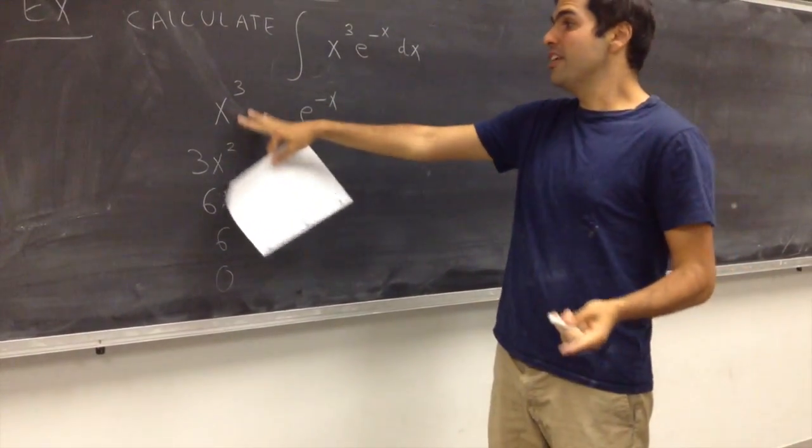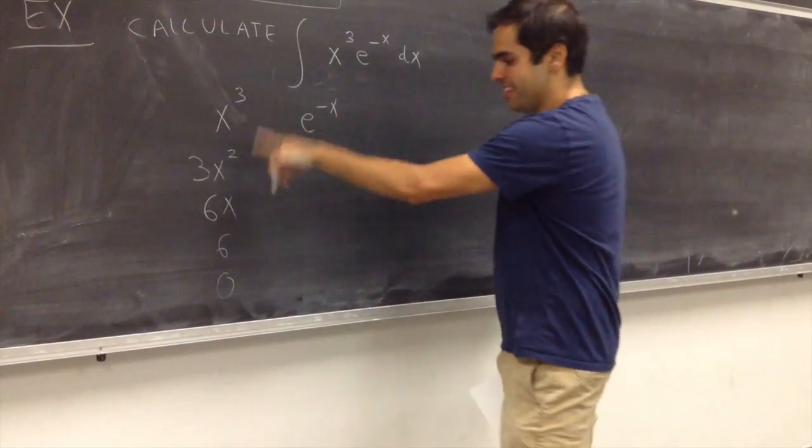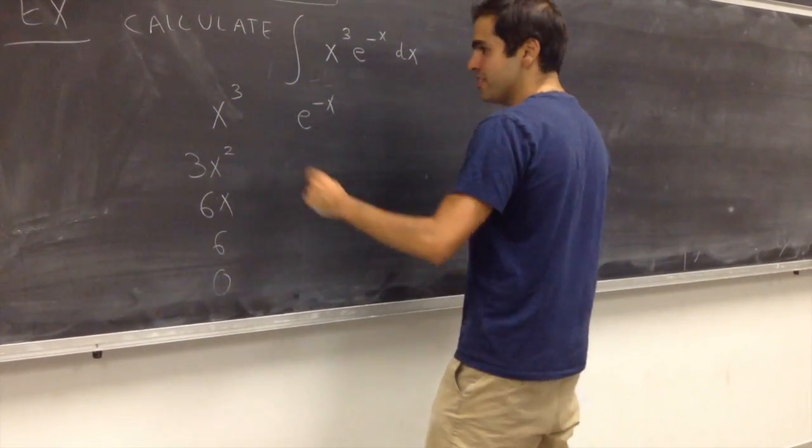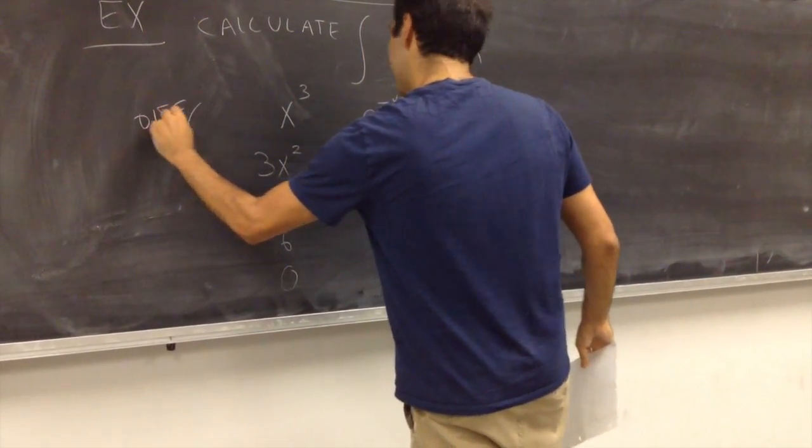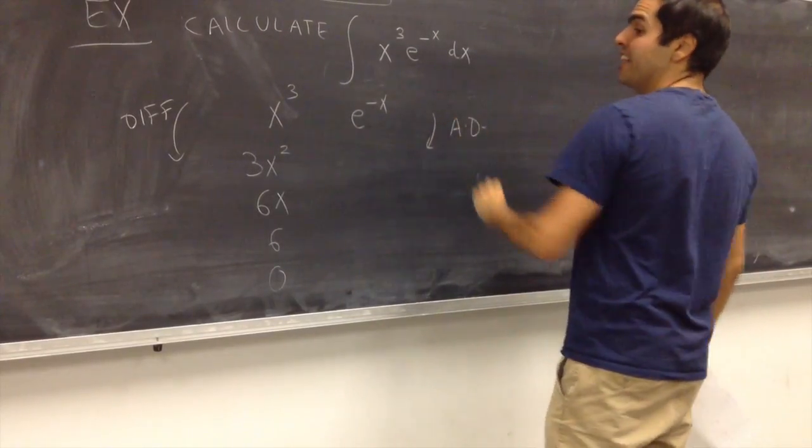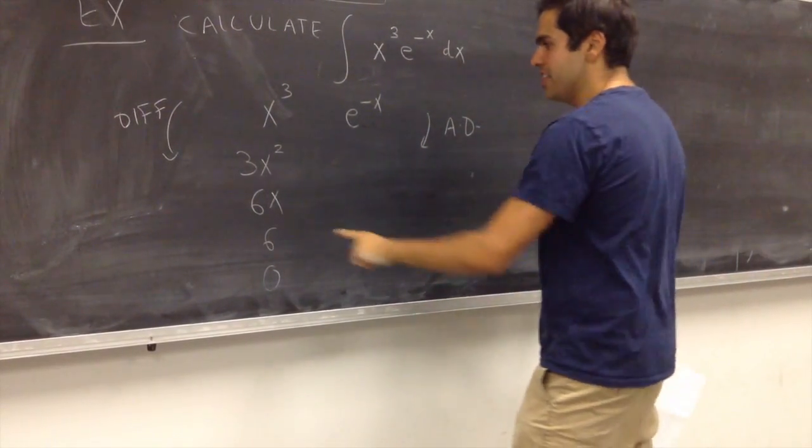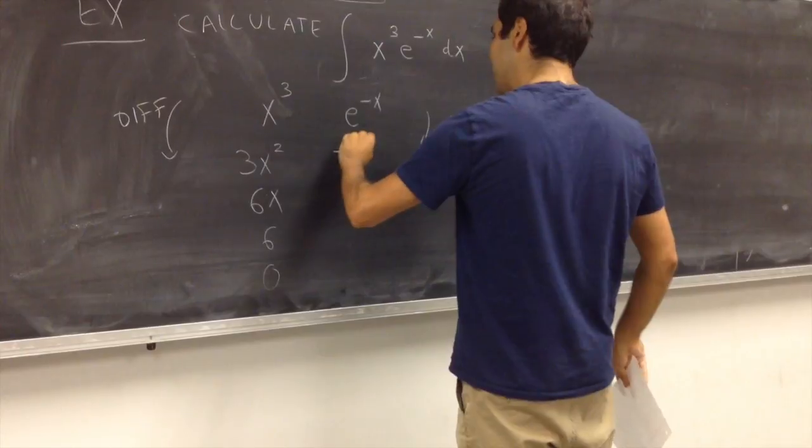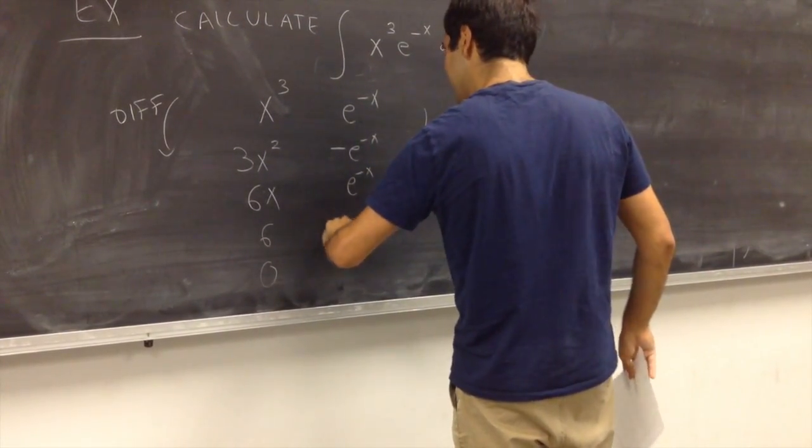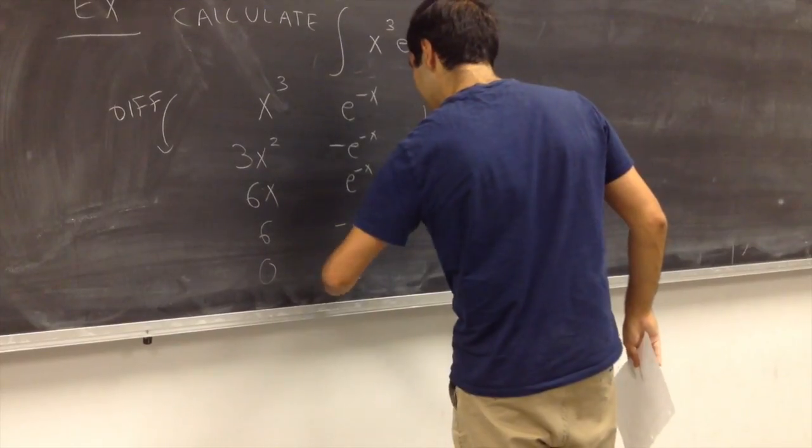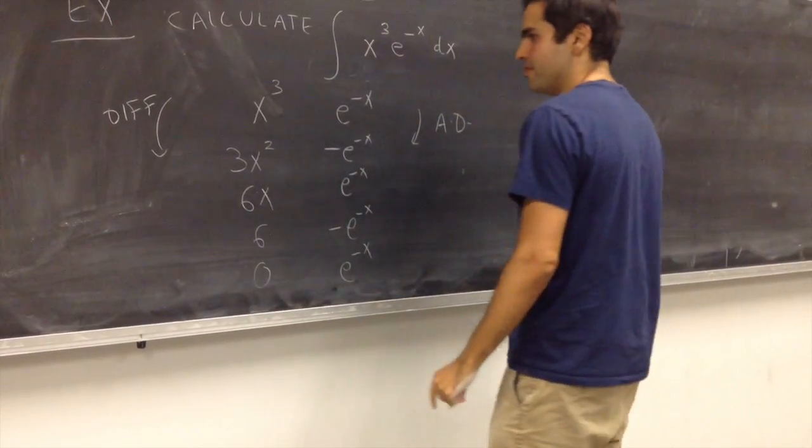Of course, by the way, this only works for polynomials until you get a row of zeros. So, here you differentiate. And here you do the opposite. You anti-differentiate until you get this line. So, you get minus e to the minus x, e to the minus x, minus e to the minus x, and e to the minus x.